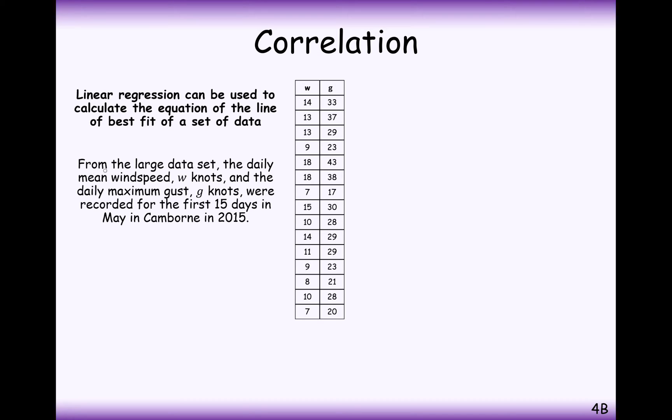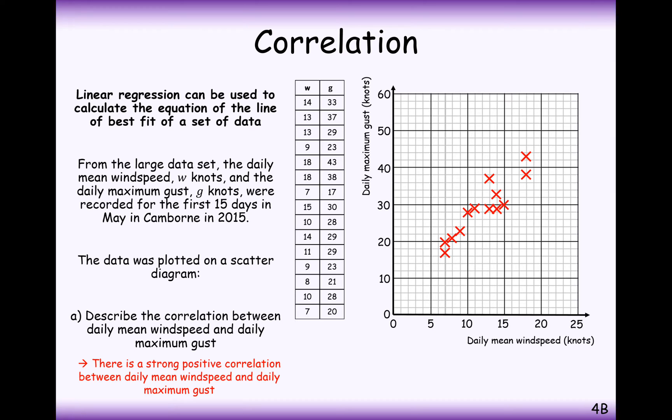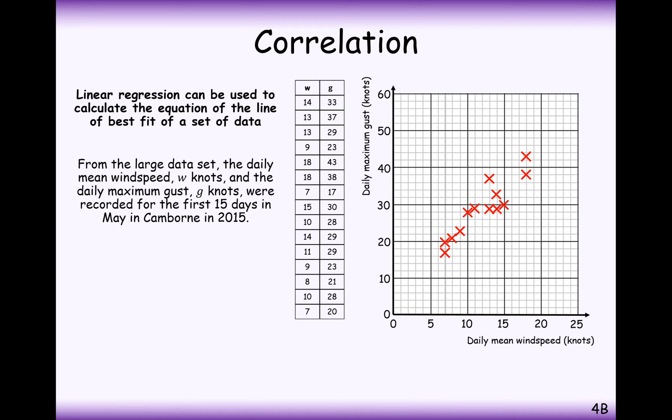So what we have here is a set of data from the large data set: daily mean wind speed W in knots, and the daily maximum gust G in knots, where records for the first 15 days in Camborne in 2015 of May. Plot these on a diagram, so we're going to get this sort of shape here. Well, here it looks like there's a strong positive correlation between the daily mean wind gusts and the daily mean wind speed.